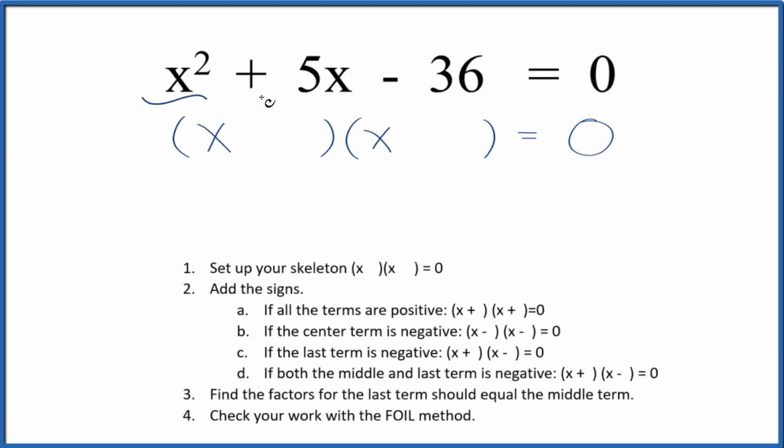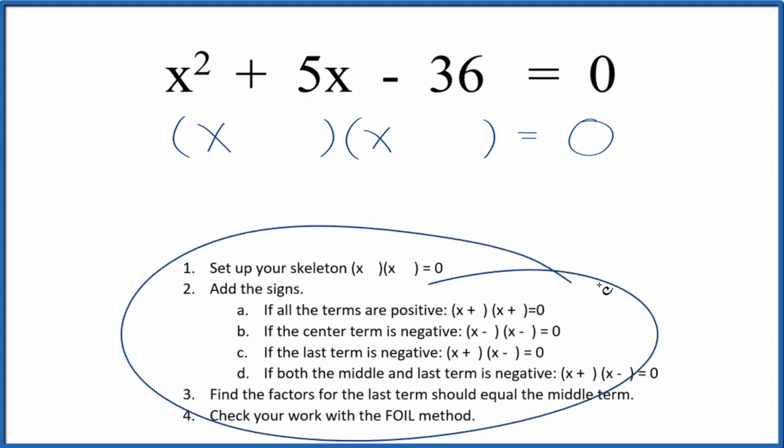Let's factor the equation x squared plus 5x minus 36, and we'll use these guidelines here to help us do that. The first thing we want to do is set up our skeleton equation. So I've done that right here already.